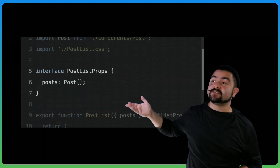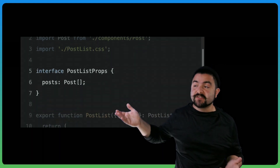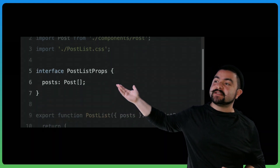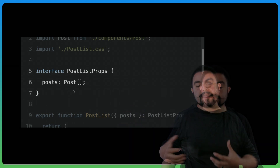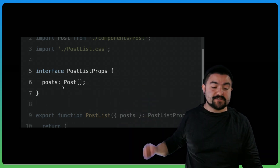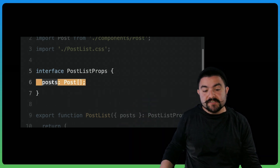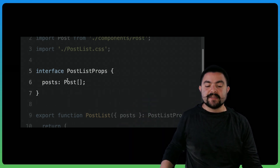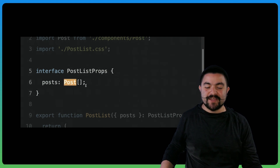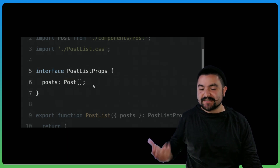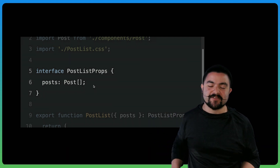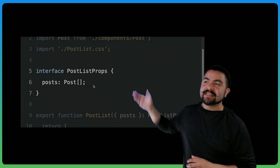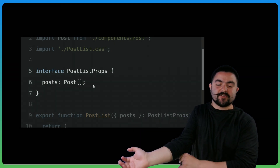Lines five through seven are TypeScript. If you've never seen TypeScript before, essentially here we're describing an object — we're saying that this object will have a post array, and each one of those objects in the array is going to be a post type. We dive into TypeScript and explain all of this in the course, but lines five through seven are all TypeScript.